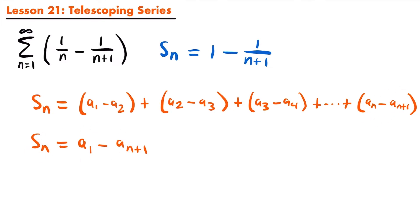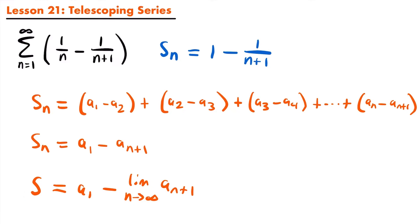Because of this, we can say that a telescoping series converges to a sum s if we take the limit as n approaches infinity of this partial sum. Since a sub 1 is a constant, s equals a sub 1 minus the limit as n approaches infinity of a sub n plus 1. If this limit exists, then s exists and the series converges. If this limit diverges, then the telescoping series also diverges.